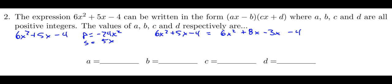So if you put those together, notice that I'm still getting that positive 5 in the middle. And then the product of 8 and -3 is going to give me that -24.